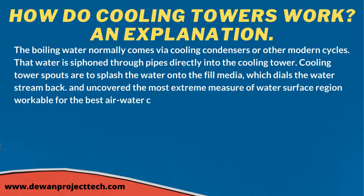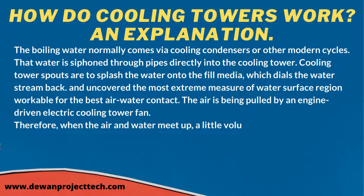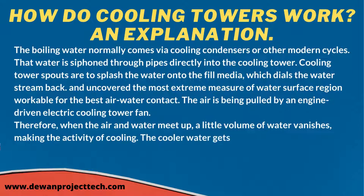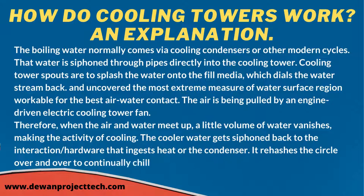The air is pulled by an engine-driven electric cooling tower fan. When the air and water come together, a small volume of water evaporates, creating a cooling effect. The cooler water is then pumped back to the process equipment that absorbs heat, or the condenser. This cycle repeats continuously to keep the warmed equipment or condensers cooled.